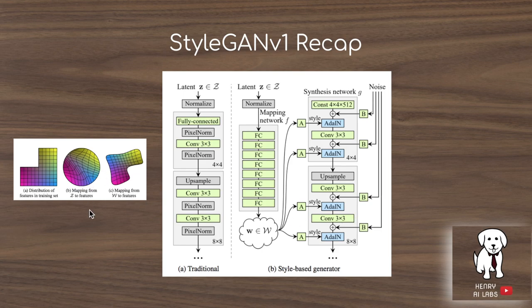They also introduced a perceptual path length quality metric. There aren't a lot of good quantitative metrics to evaluate generated images from generative models like GANs. Some of them are the Fréchet inception distance, the inception score, or precision and recall — things that use pre-trained image classifiers to compare the statistics of generated images with original data points. The perceptual path length metric sees how smooth the change is when you change the latent vector Z and how semantically different the resulting image is.